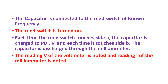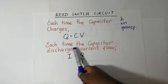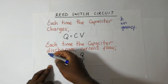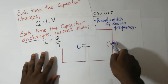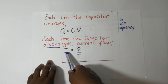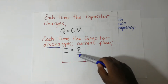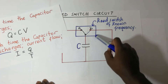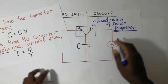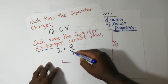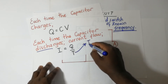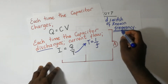Each time the capacitor charges, the charge gained during the charging process is given by Q = CV, the capacitance multiplied by the potential difference. Each time the capacitor discharges, the current flowing through the milliammeter is given by I = Q divided by the periodic time T. Since the reed switch frequency is known, the periodic time is given by T = 1 over f.